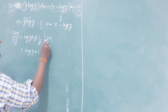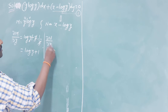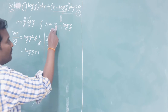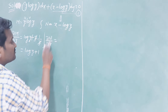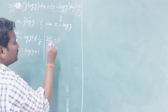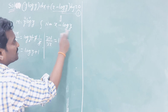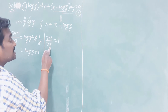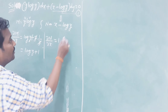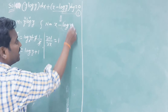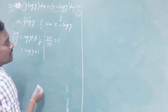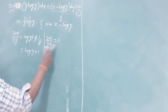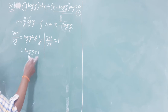Now calculate ∂N/∂x: x is the only variable, so the partial derivative of x with respect to x is 1, and the partial differentiation of log(y) with respect to x is 0 because it is a constant. So ∂N/∂x = 1.